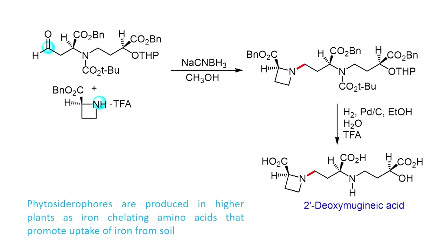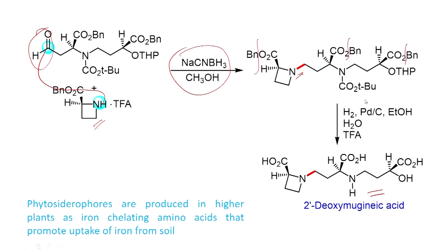Here an example is shown: the synthesis of an amino acid starting with a secondary cyclic amine. When you react it with an aldehyde, you get the imine as a product. That imine is reduced in the reaction medium using sodium cyanoborohydride to give the amine. When you do hydrogenation using hydrogen in the presence of palladium on charcoal in ethanol solvent, you can deprotect the benzyl group. The protecting groups can also be removed in the presence of acid, and in this way you generate the amino acid as the product — these are produced in higher plants as iron-chelating amino acids that promote uptake of iron from the soil.